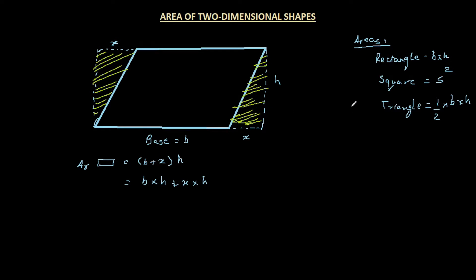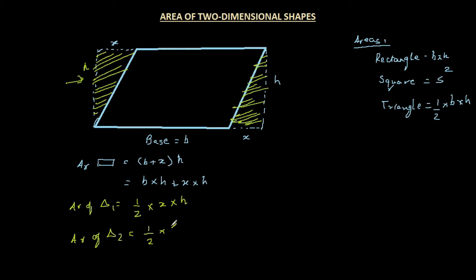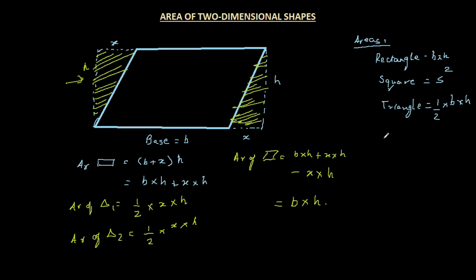We exclude the two triangles on either side of the parallelogram. The area of each triangle is half times base times height. For each triangle the base is x and the height is 'edge,' giving half·x·edge per triangle. The total excluded area is half·x·edge plus half·x·edge, which equals x·edge. Subtracting from the rectangle: b·edge + x·edge − x·edge = b·edge. So the area of a parallelogram is also base times height.